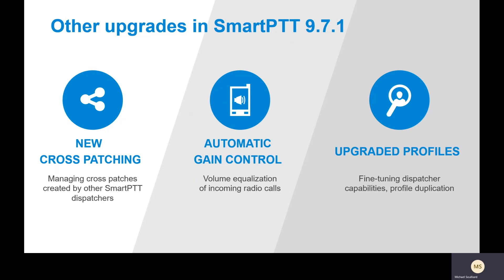This is a really great strengthening of the cross patching feature, and I think it differentiates us against a lot of other dispatching consoles out there. Next is the automatic gain control (AGC). In the past, you might have one radio user yelling into their radio so the dispatcher turns down the volume, and then the next user is talking away from their radio so the volume's too low. With the AGC, the dispatcher shouldn't need to touch the volume control because the software will equalize — it'll reduce the volume of the person yelling and increase the volume of the person talking away from their radio.